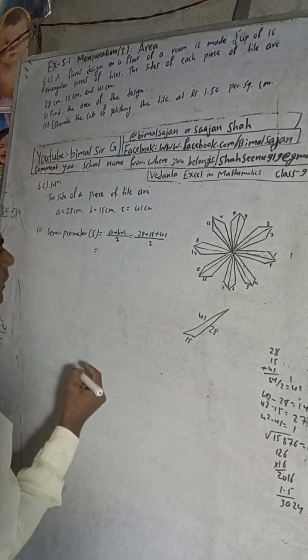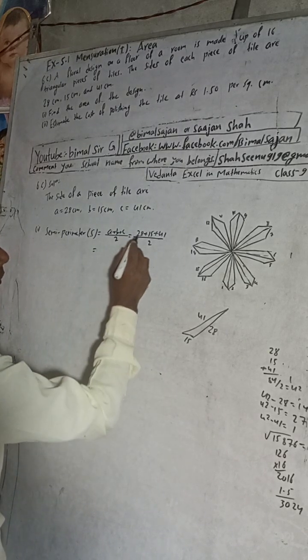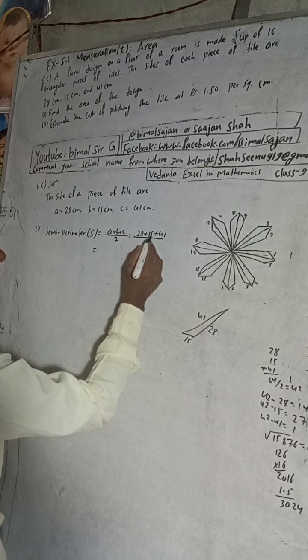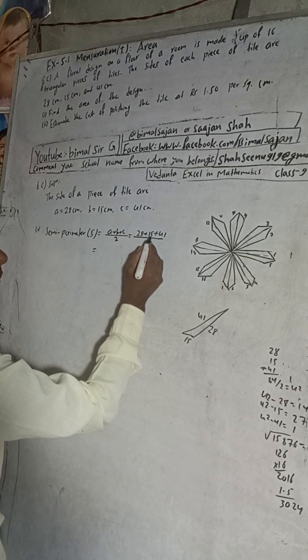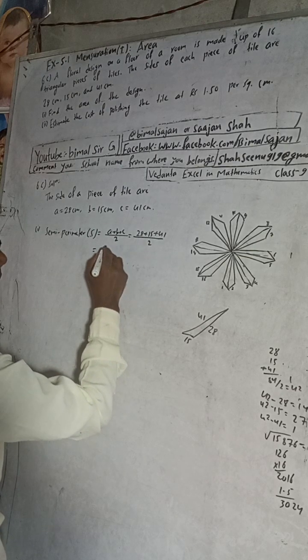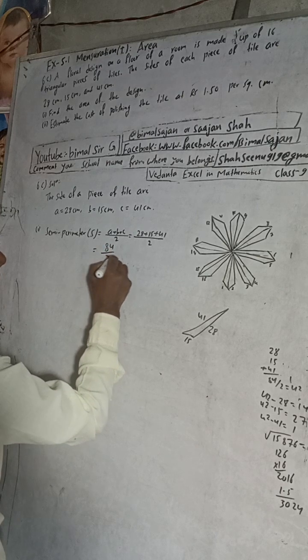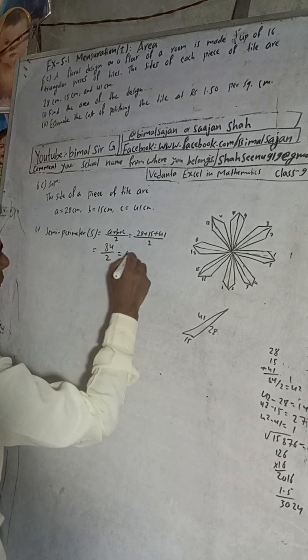When we add this all, we will get here 84, divide by 2, and this will be 42 cm.